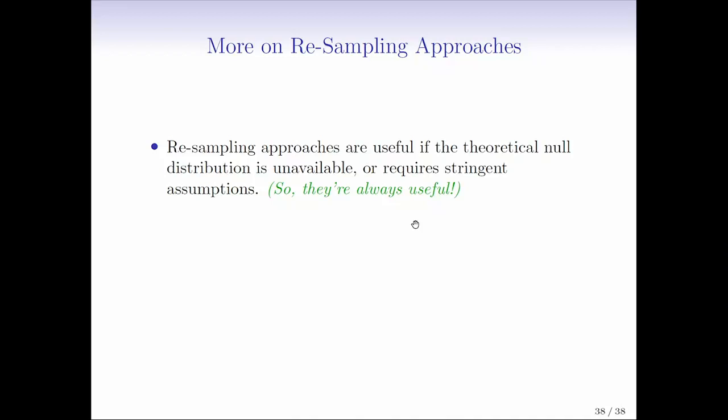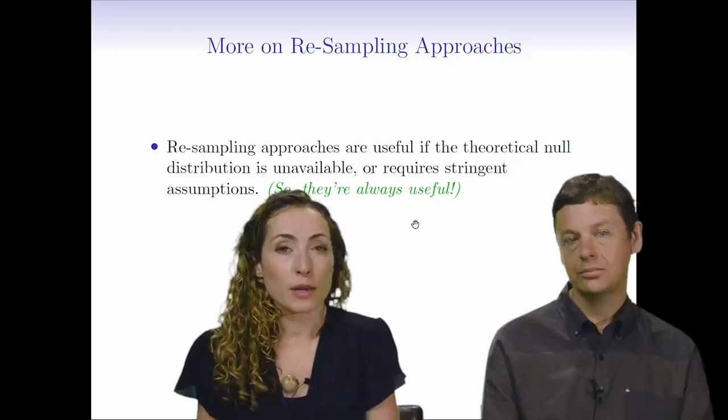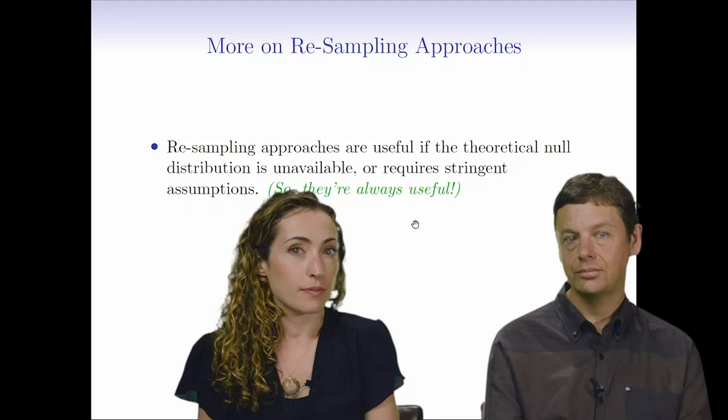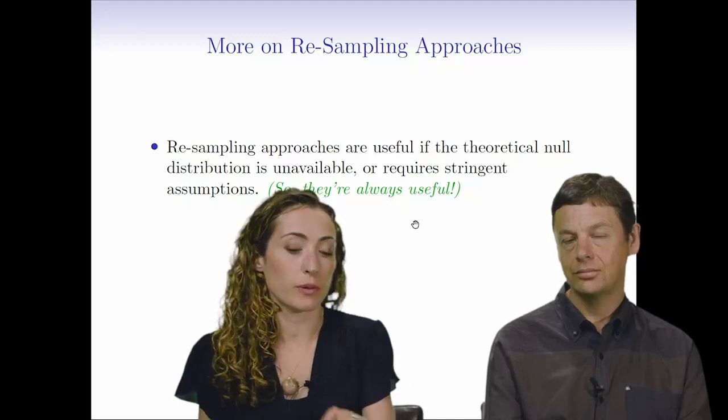So when are resampling approaches useful? Well, they're definitely useful if the theoretical null distribution is unavailable. So in the case of a two-sample t statistic, if you have a large sample size, this is just my opinion, a different side decision might disagree with me. I feel like if you're doing a two-sample t statistic and your sample size is really large, maybe you don't really need a resampling approach. But if your sample size is smaller, then that's a really good reason. You might want a resampling approach for a two-sample t test because in that case, we actually don't know the theoretical null distribution. Or maybe there's a test statistic that you're interested in or a null hypothesis you're testing for which you really just don't know the theoretical null distribution at all without making some really strong assumptions. So one way to think about this is that resampling approaches, maybe we can just say they're always useful because they don't usually cost us very much to do. And they can allow us to overcome some hurdles associated with not knowing a theoretical null distribution.